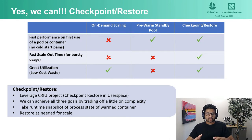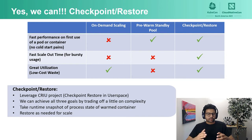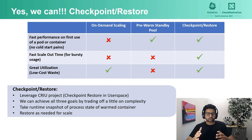CRIU is an open source project on GitHub with around 10,000 commits and hundreds of contributors. The idea here is to checkpoint the warmed container that is already initialized and restore as needed during scaling. With this approach, the startup time is reduced considerably. In some cases, we saw around 70-fold improvement in startup time — going from a couple of minutes to a couple of seconds.